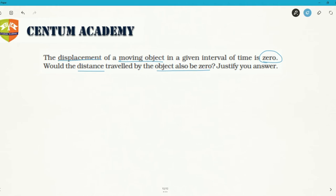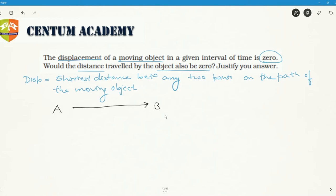Now what is displacement and distance? We need to first understand. Displacement is nothing but the shortest distance between any two points on the path of the moving object. So let's say this was point A and this is point B. If you draw the shortest distance, the line between A and B, this shortest distance is called displacement. Its unit is meter.